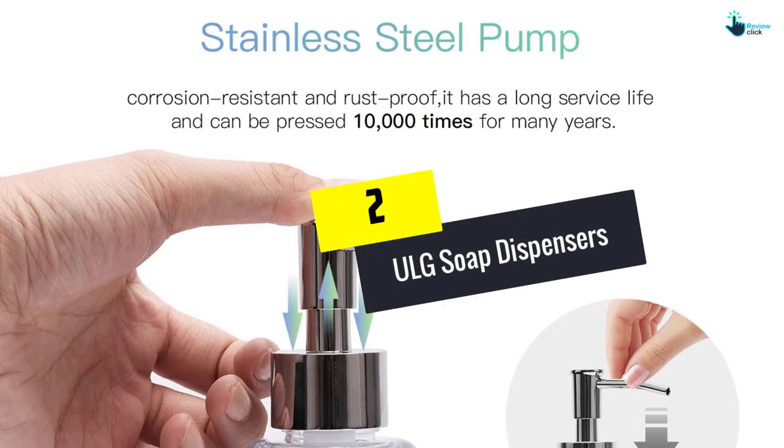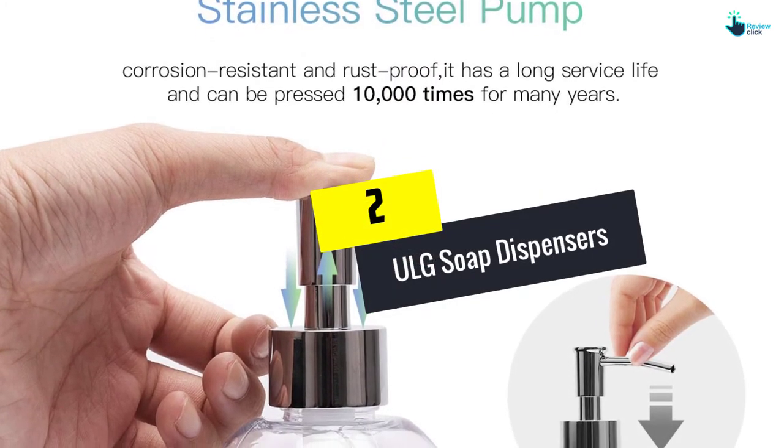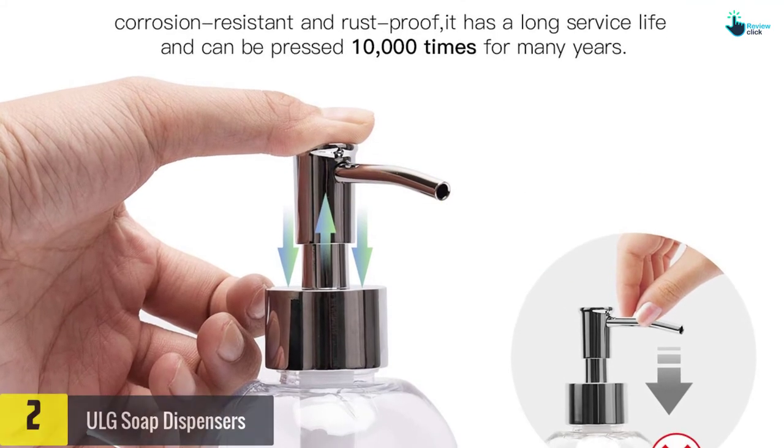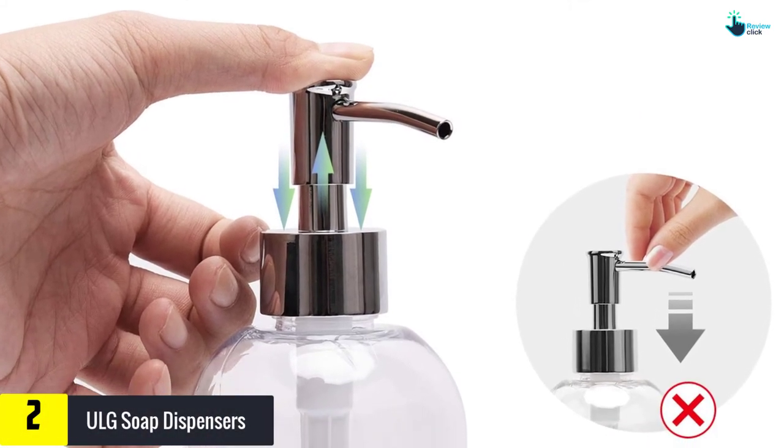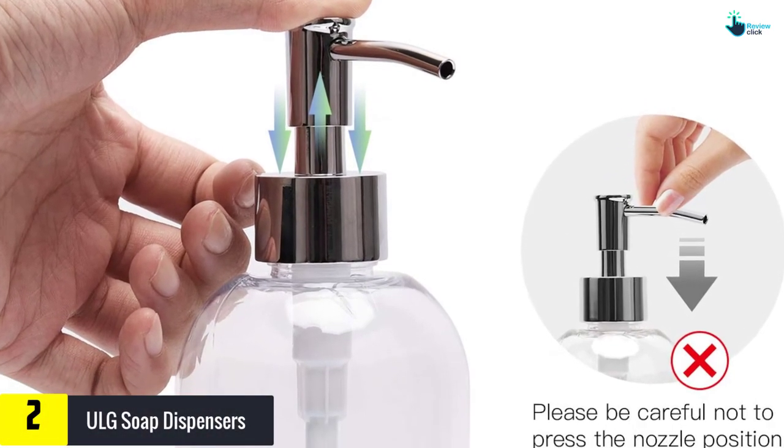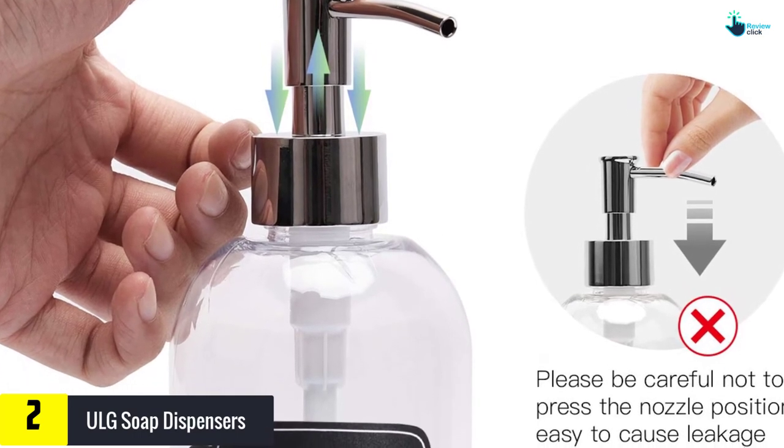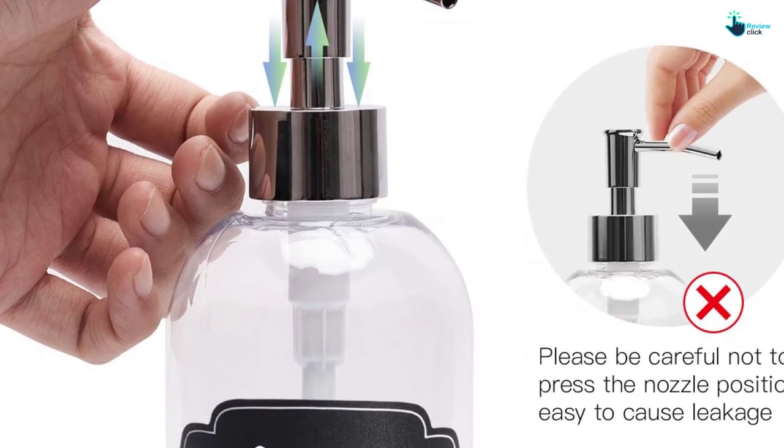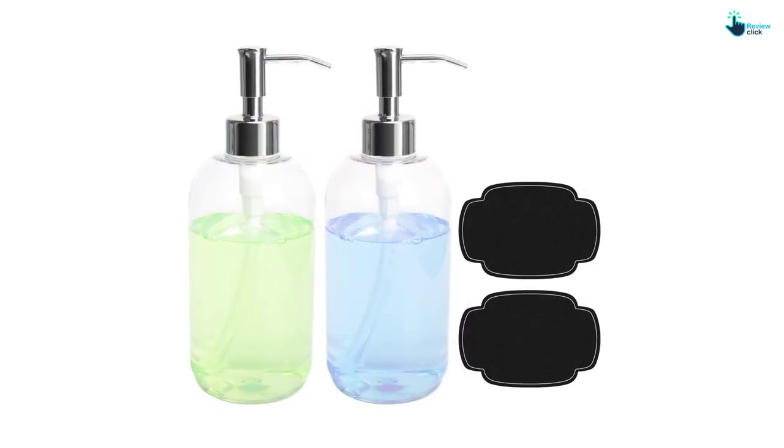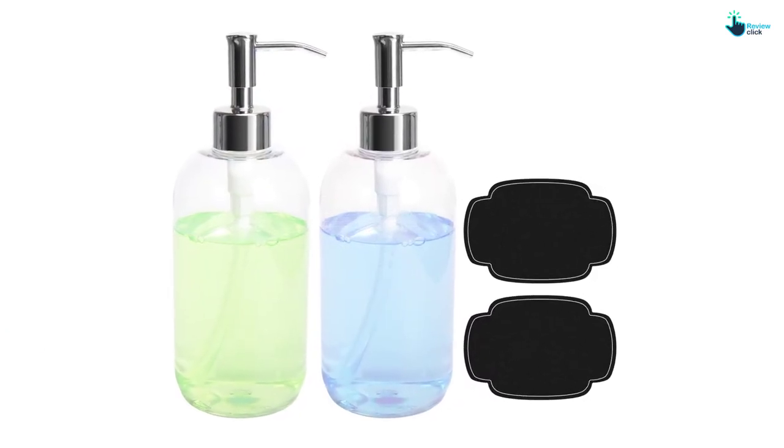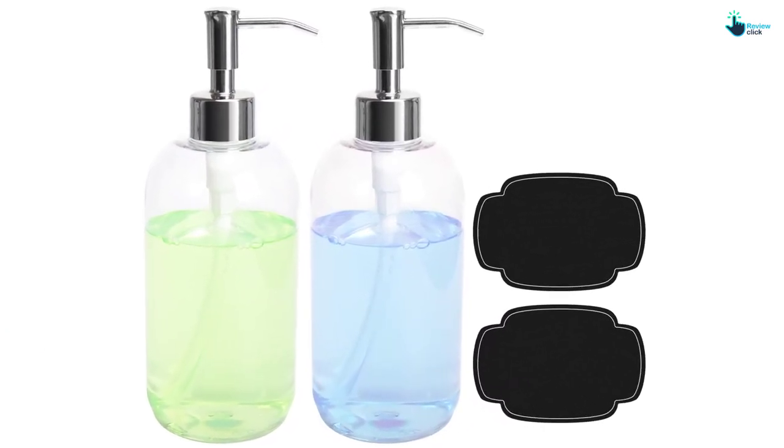At number 2, we have the ULG Soap Dispensers. We love this piece because of its generous capacity of 16 ounces that makes it ideal for many situations. It's made from heavy-duty pet plastic and comes in an easy C design. The pump is made from quality and rust, corrosion-resistant stainless steel and is simple to operate.